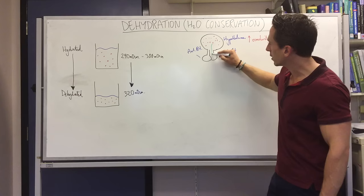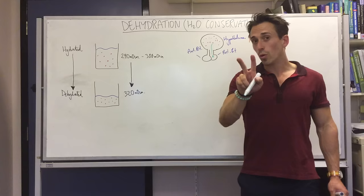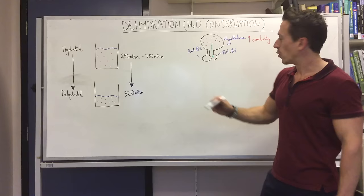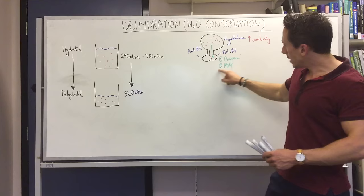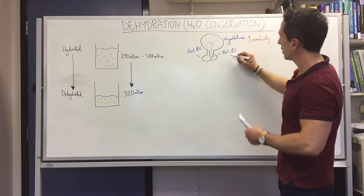Now this increase in osmolarity is picked up by the hypothalamus, and the hypothalamus sends a signal. Now does it send it to the posterior or anterior pituitary? Well it sends it to the posterior pituitary gland. And sending a signal to the posterior pituitary gland signals it to release one of two hormones. So remember there's two hormones in the posterior pituitary: one is oxytocin and the other is ADH, antidiuretic hormone. Well today we're dealing with hydration and water conservation, so it's going to be antidiuretic hormone. So the posterior pituitary gland now releases antidiuretic hormone.